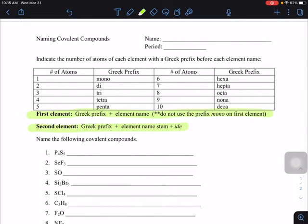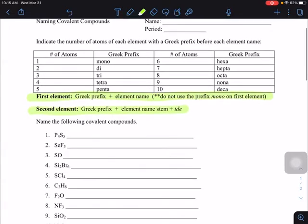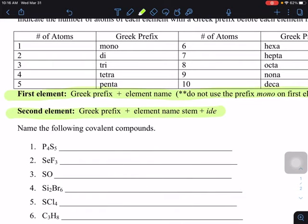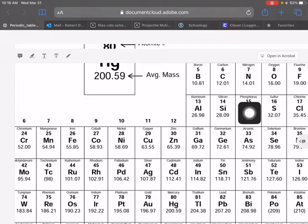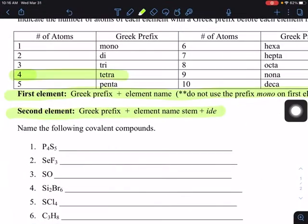For the first one here we've got P4S5. The subscript 4 is telling you how many you have, and that prefix is going to be tetra. P is phosphorus, and if you don't know the names of these, you just have to go to the periodic table. P tells you that it is phosphorus, so we're going to do tetra phosphorus.